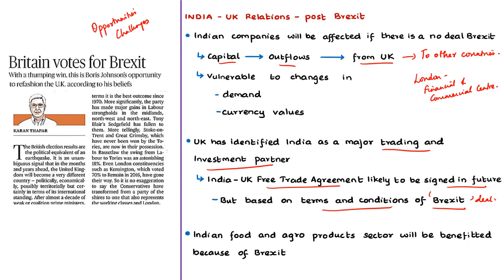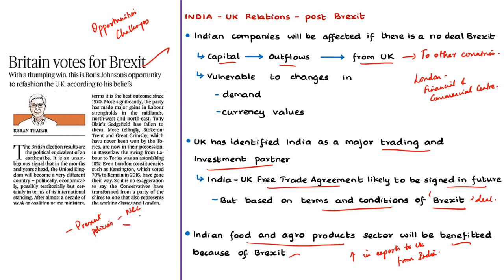India's food and agro-product sector will benefit from Brexit, as exports to UK from these sectors are likely to increase. The author also notes that the newly elected UK Prime Minister might be concerned about current Indian government policies such as the National Register of Citizens and the Citizenship Amendment Bill. While he may not criticise publicly, he could express disapproval behind closed doors. These are some of the challenges and opportunities in India-UK relations after Brexit.